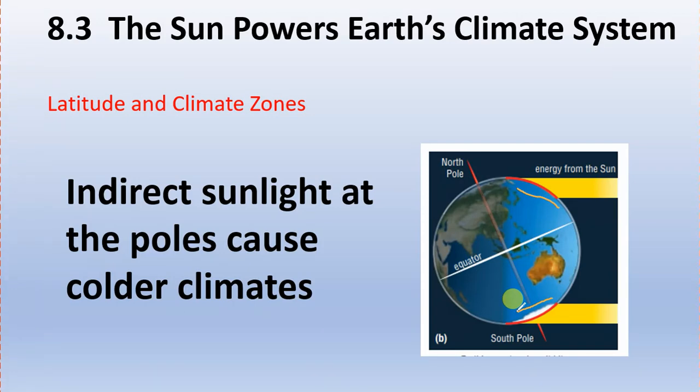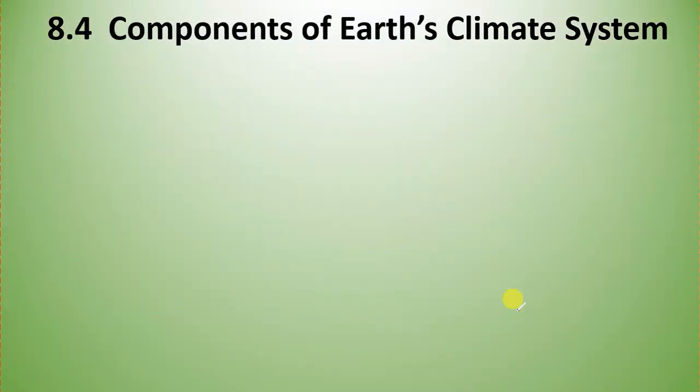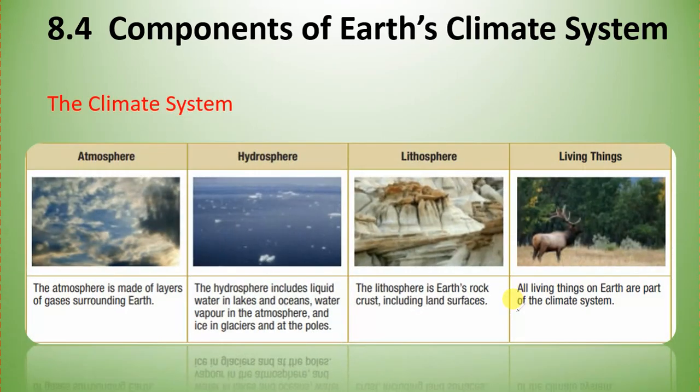8.4 Components of Earth's climate system. The climate system - there's actually four parts that we consider to make up all the different areas of Earth that have life, water, and particles. We've got the atmosphere - that's where our gases are. Hydrosphere is where the water is. Lithosphere is the Earth. And then living things fall into the biosphere. Let's take a closer look at some of these.